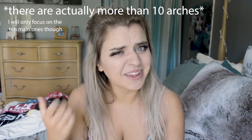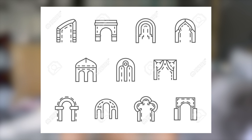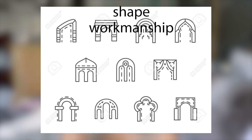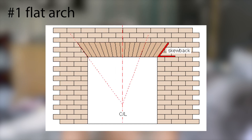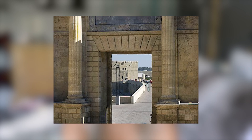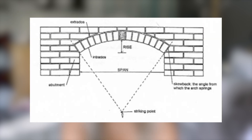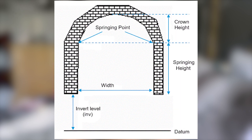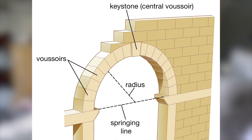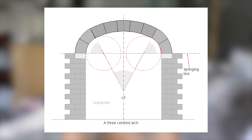There are 10 types of arches, classified by shape, workmanship, and materials. One: flat arch — the intrados, the inner curve of an arch, and the extrados, the outer curve, are horizontal and flat. Two: segmental arch — a basic type of arch where the center of the arch lies below the springing line, which is the point from which the arch rises from its vertical supports.